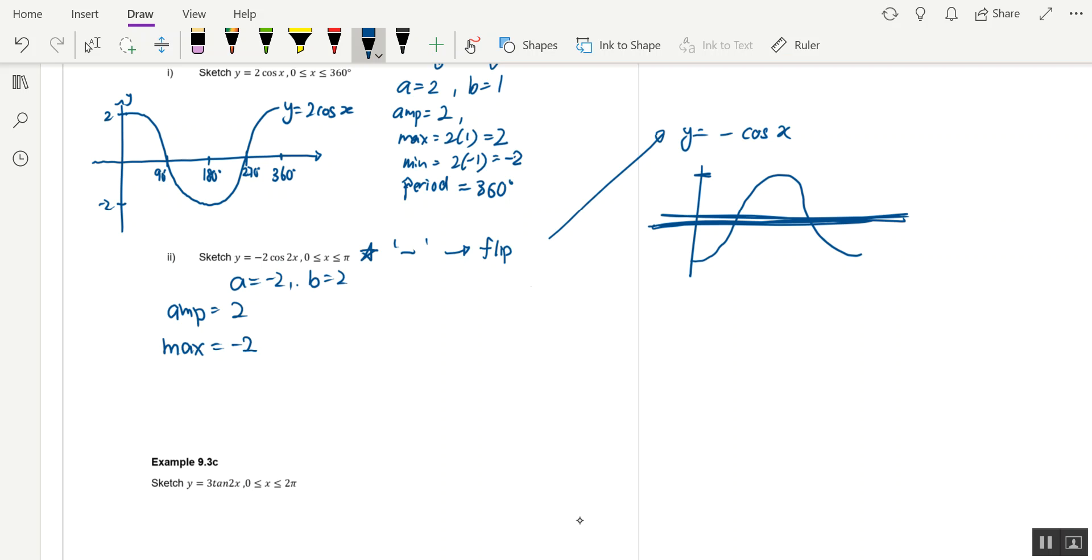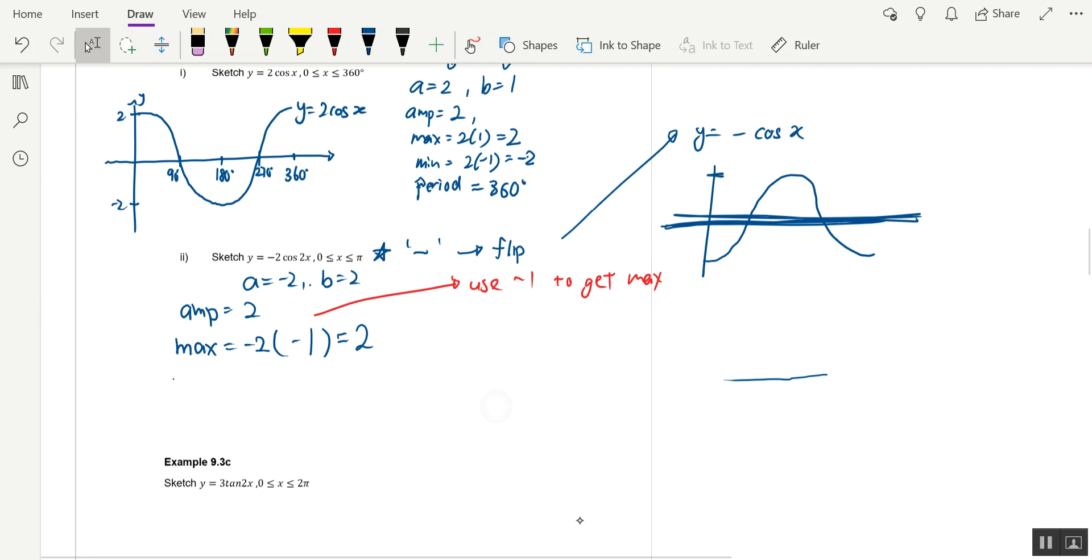In order to get maximum, we use negative 2 times negative 1 of the cosine graph. Use negative 1 to get maximum when you have a negative number in front, because negative 1 times negative 2 will be equals to 2. Minimum equals to negative 2 times 1, which is negative 2. And period is equals to 2 pi over b, the b is 2, which is equals to pi.